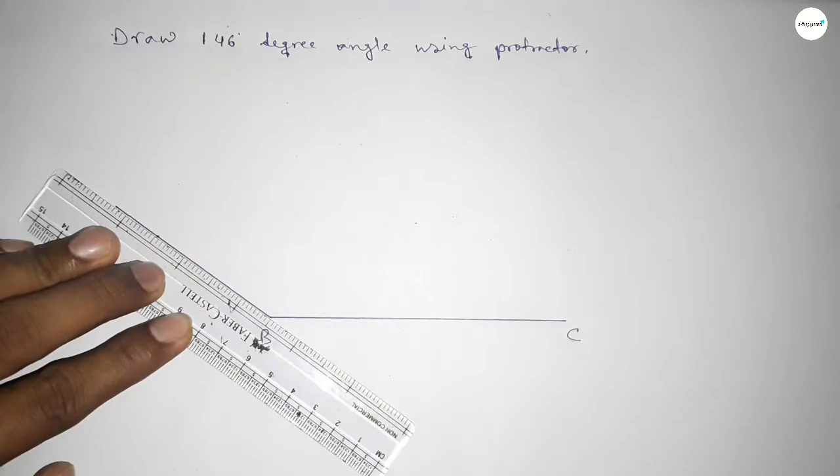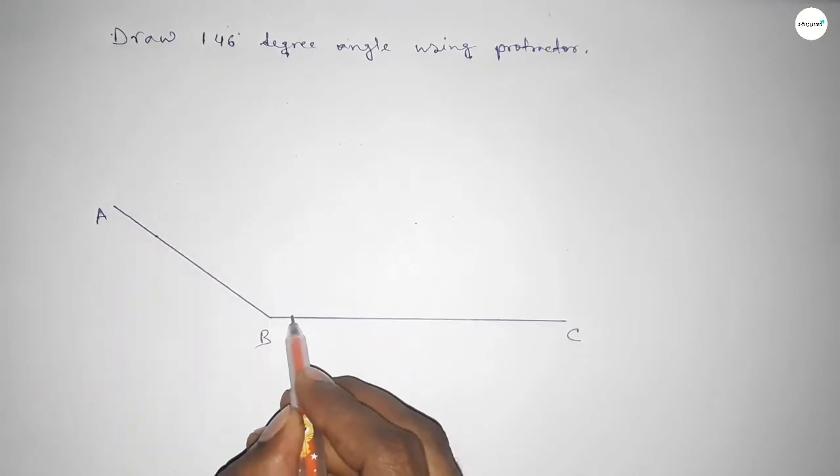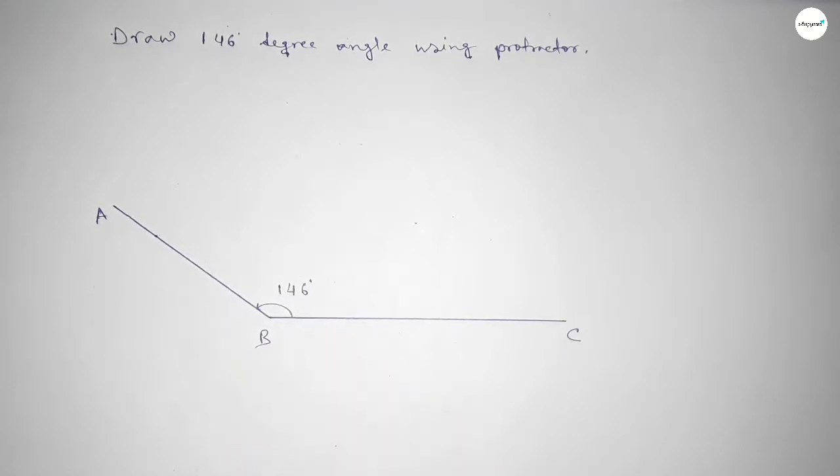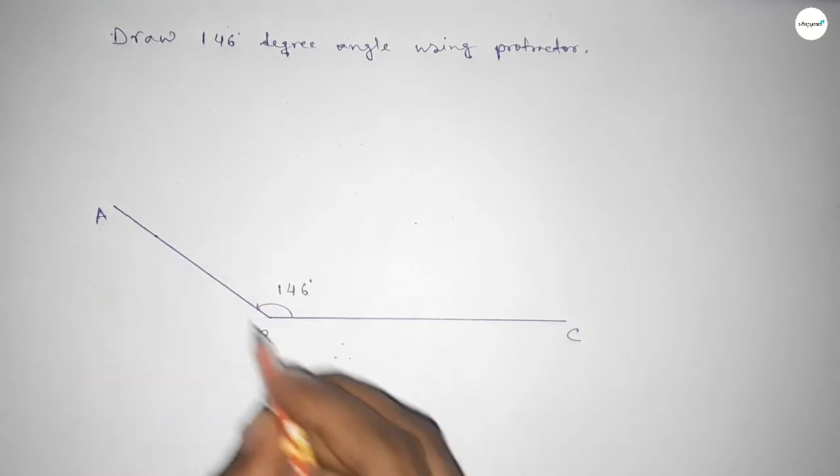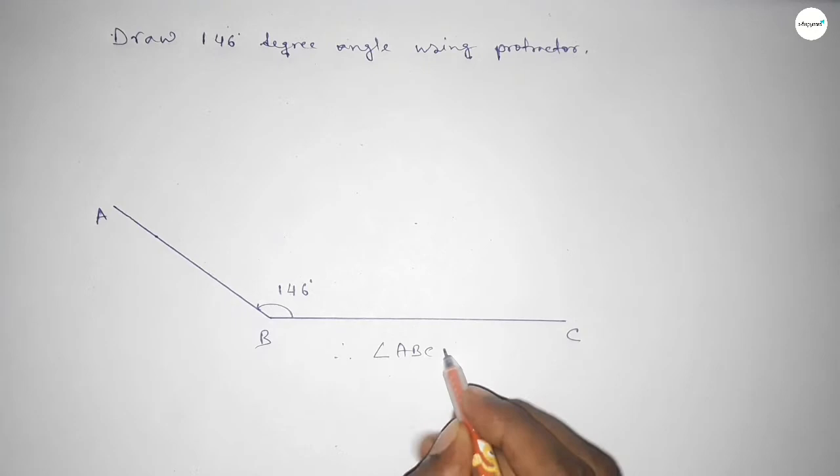And taking here point A. So angle ABC up to this is 146 degrees. Therefore, angle ABC equals 146 degree angle.